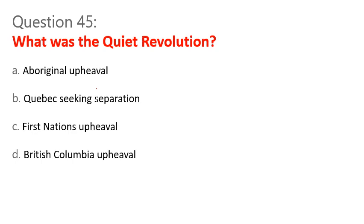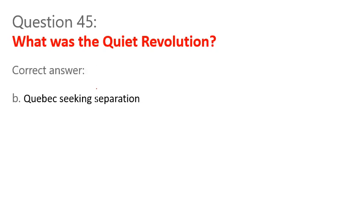Question 45. What was the Quiet Revolution? A. Aboriginal upheaval. B. Quebec seeking separation. C. First Nations upheaval. D. British Columbia upheaval. Correct answer: B. Quebec seeking separation.